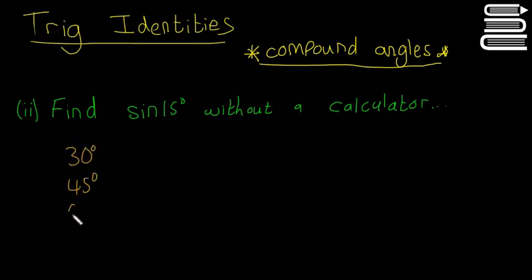They're in the tables book, so all those angles give you the sine, cos, and tan values of all of them. You're able to use those, so somehow you have to turn sine 15 into a combination of sine, cos, and tan of these ones here.